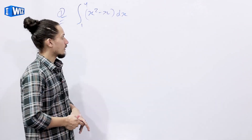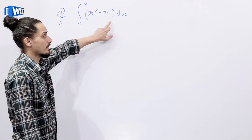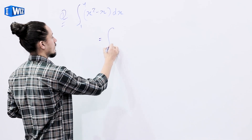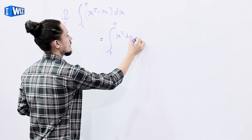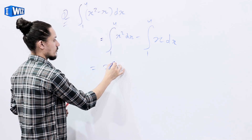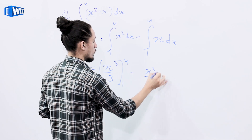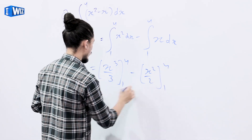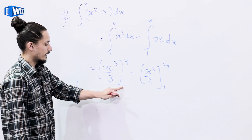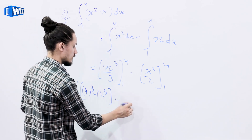And this is how you solve a definite integral. Now let's solve some examples. Our first example is to integrate x squared minus x dx within the limits 1 and 4. Using the same method: integral from 1 to 4 of x squared dx minus integral from 1 to 4 of x dx, which equals x cubed by 3 from 1 to 4, minus x squared by 2 from 1 to 4. That gives us 1/3 times (4 cubed minus 1 cubed).